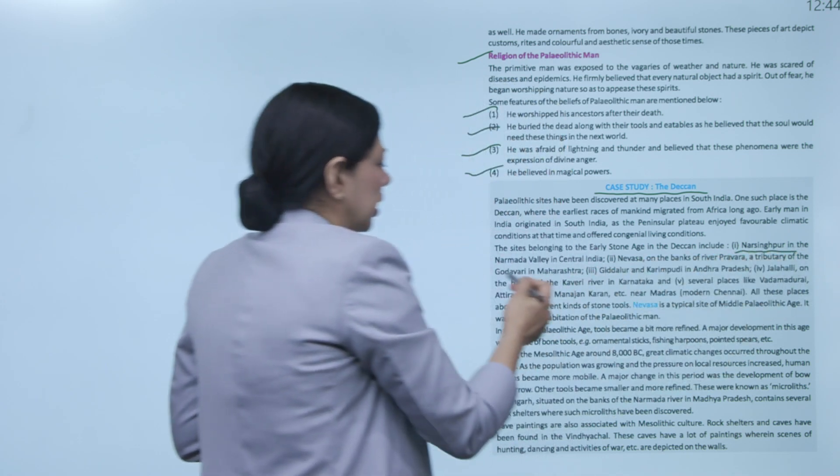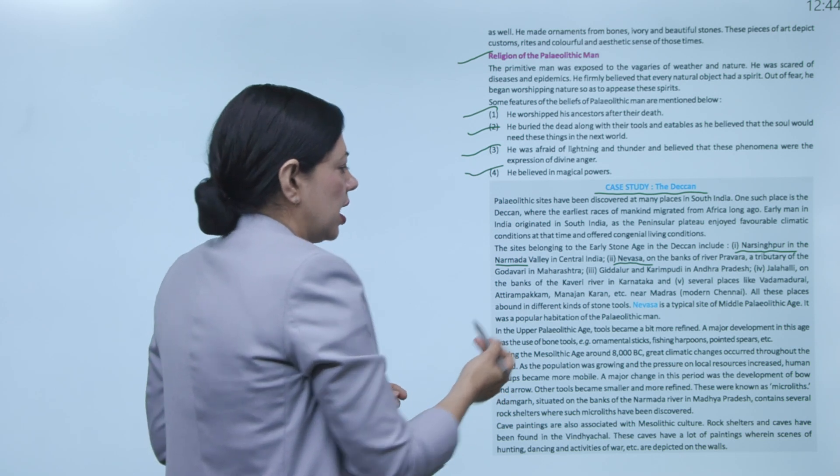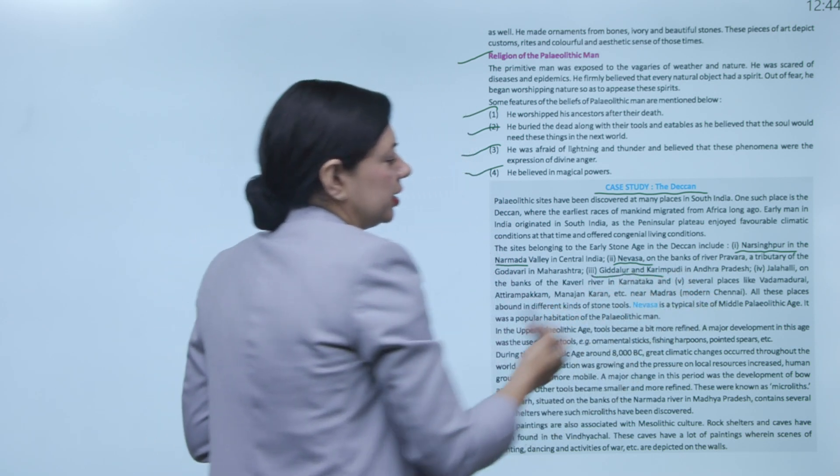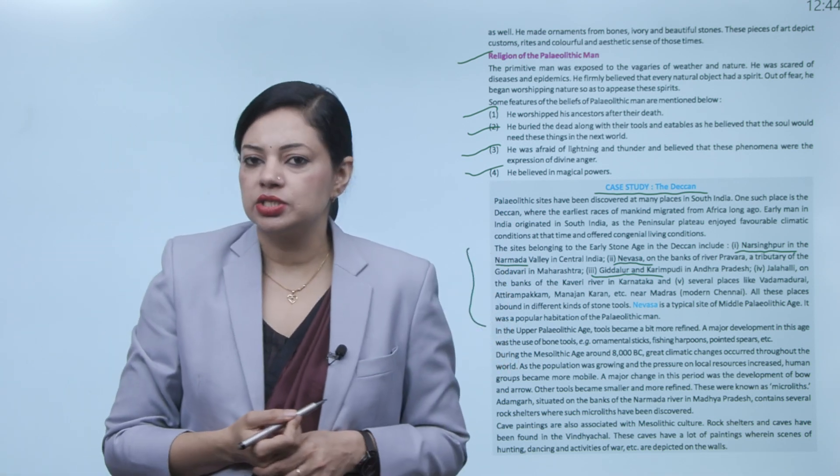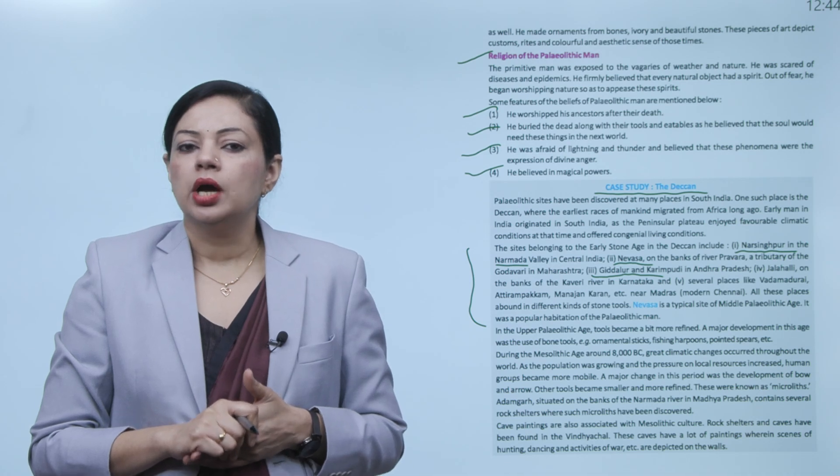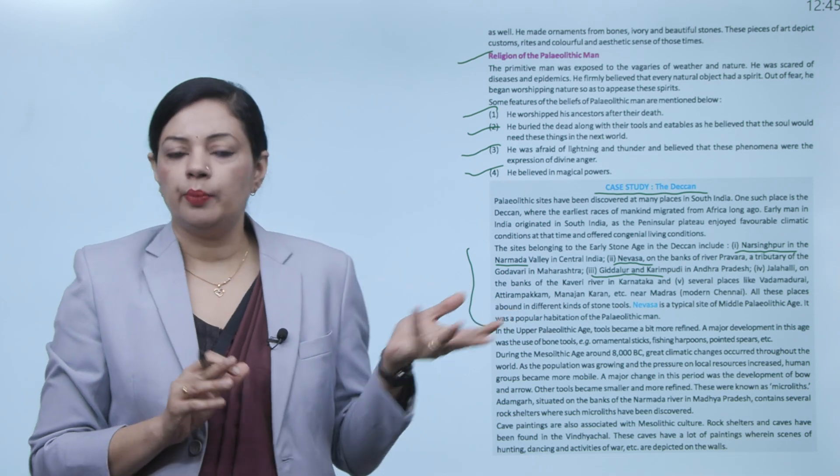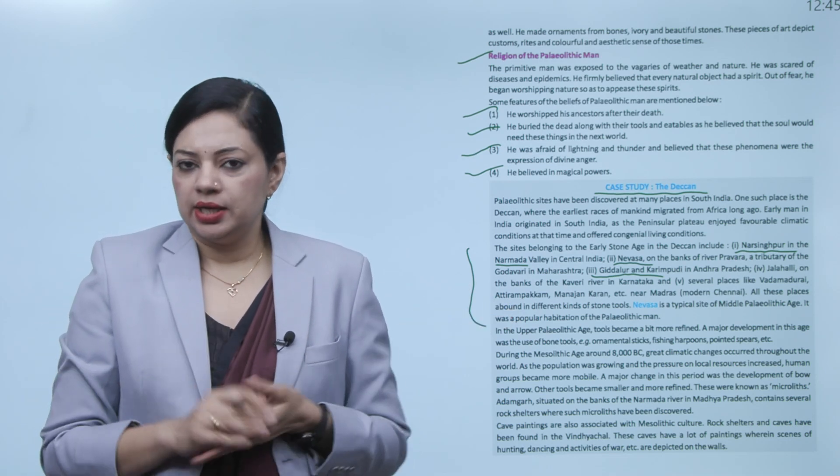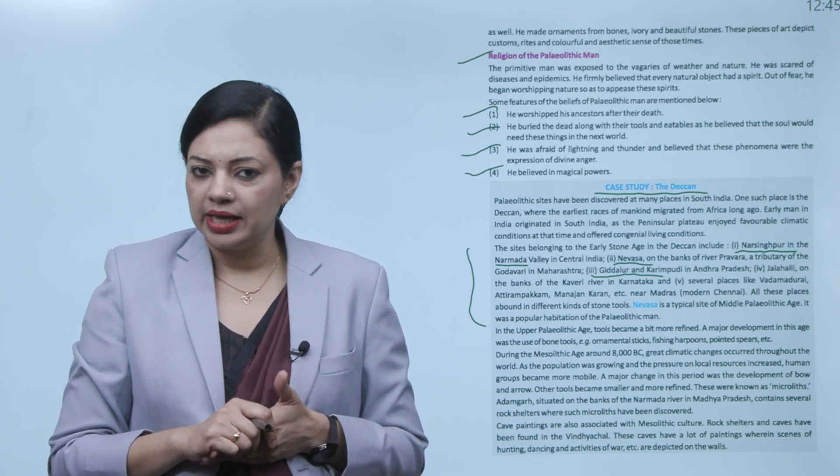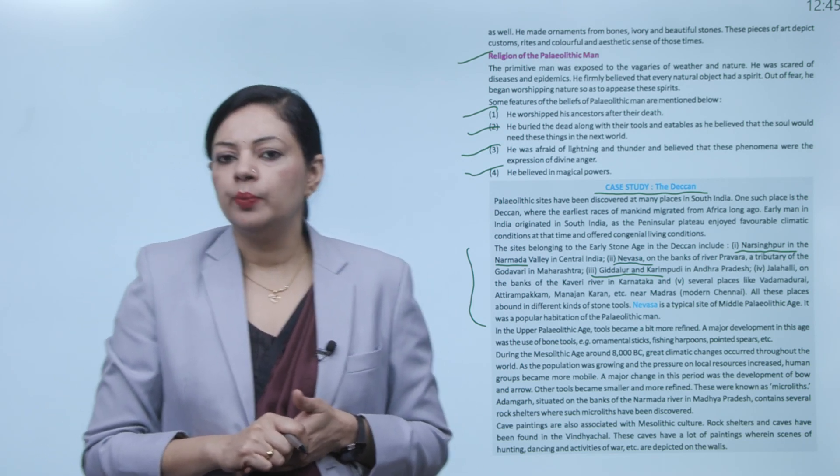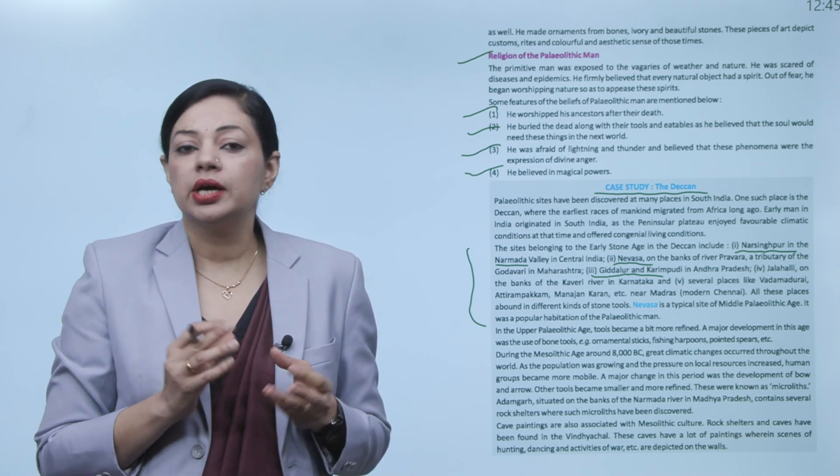The sites from the early Stone Age in Deccan, some of their names are given to you: Narsinghpur in the Narmada Valley in central India, Nevasa on the banks of river Pravara, and third is Giddalur and Kurnool in Andhra Pradesh. There are many such sites from which we have found many things from the Paleolithic age. Now in the upper Paleolithic age tools became a bit more refined. In lower Paleolithic and upper Paleolithic, when they learned to make tools better, they started to make progress in tools. A major development in this age was the use of bone tools, for example ornamental sticks, fishing harpoons and pointed spears. Now they started using bones as tools.